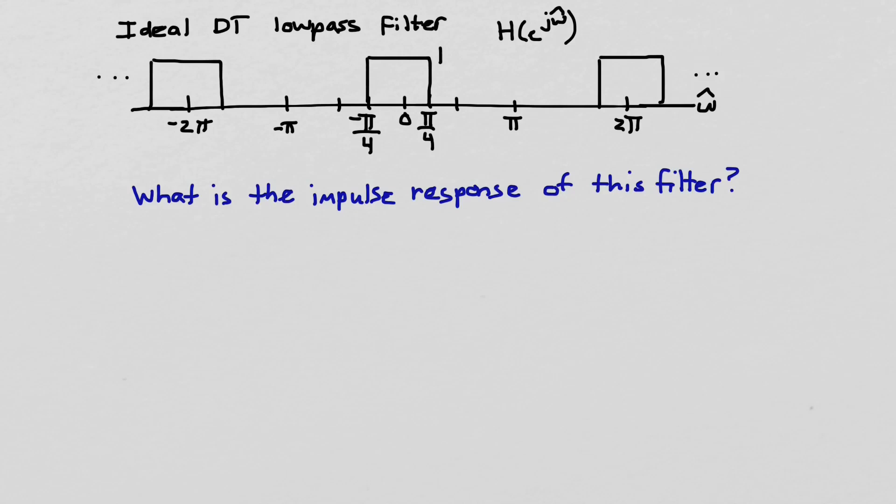The impulse response of the ideal low-pass filter is defined as the inverse Fourier transform of that ideal frequency response. So it's just the inverse discrete-time Fourier transform of that function h of e^(jω̂).